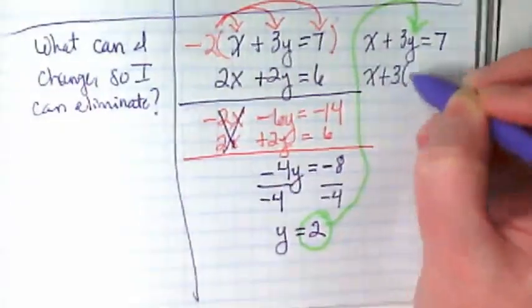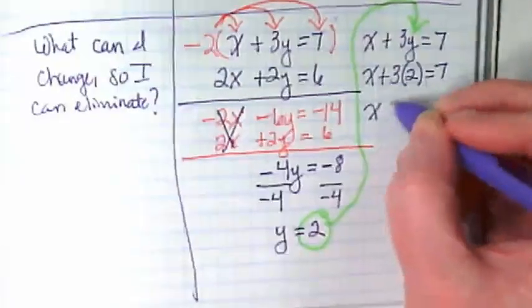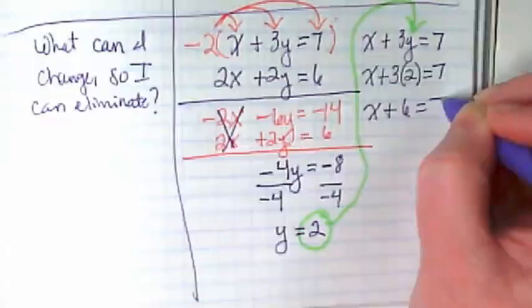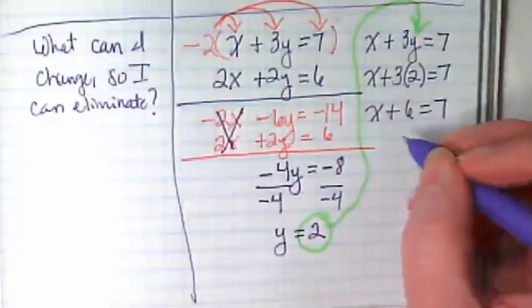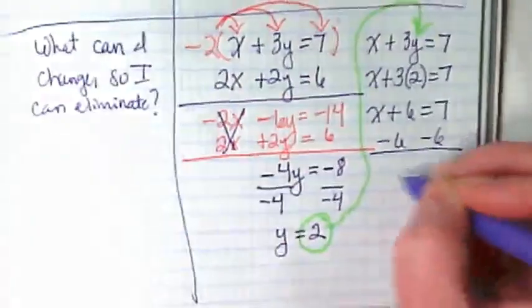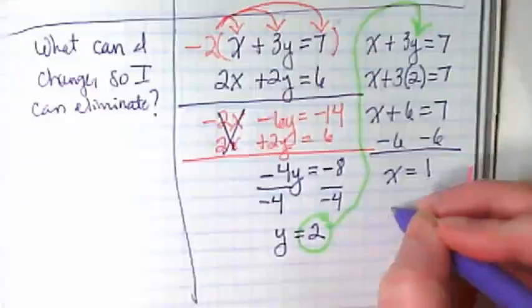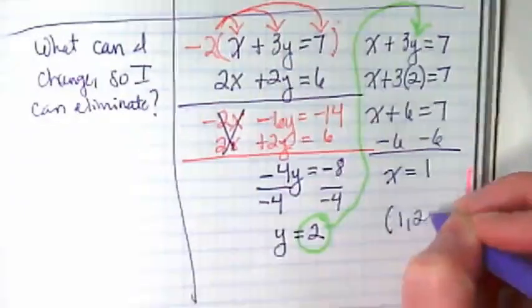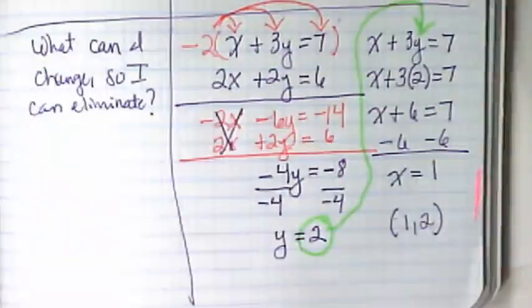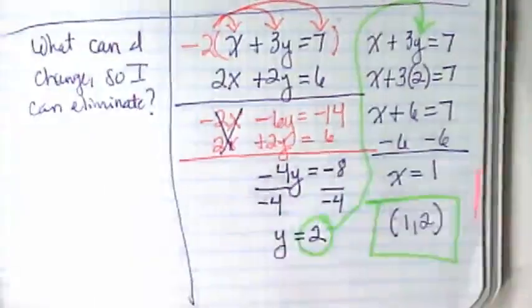X plus 3 times 2. X plus 6 equals 7. I'm going to subtract the 6 and X is equal to 1. And there's my solution. What questions do you have?